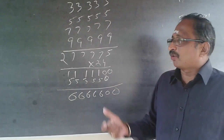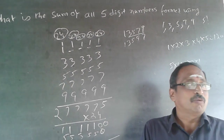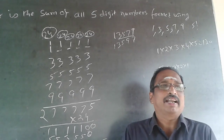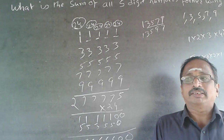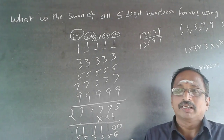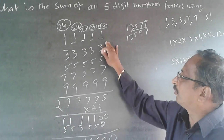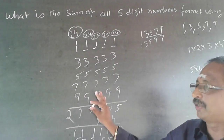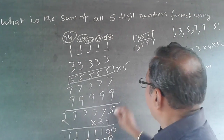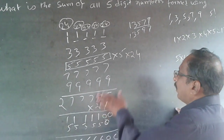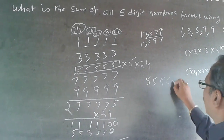There's a faster method. Whenever numbers are in an arithmetic progression and the count is odd, the center number is always the average. Here the five numbers 11111, 33333, 55555, 77777, 99999 form an arithmetic progression with equal differences. The center number 55555 is the average. So the total of those five numbers equals 55555 × 5. Then multiply by 24 for the final answer — or simply multiply 55555 × 120.